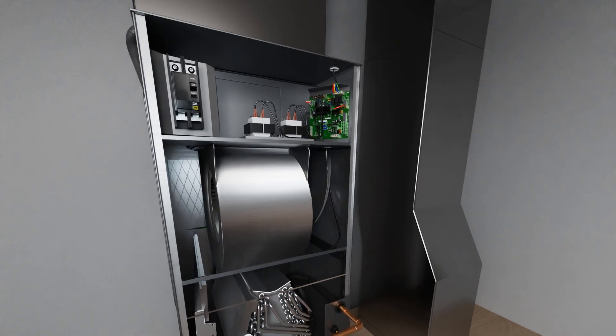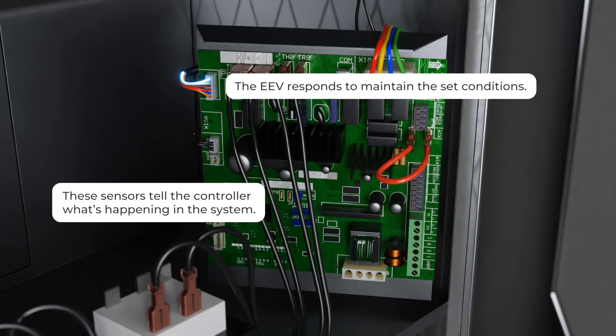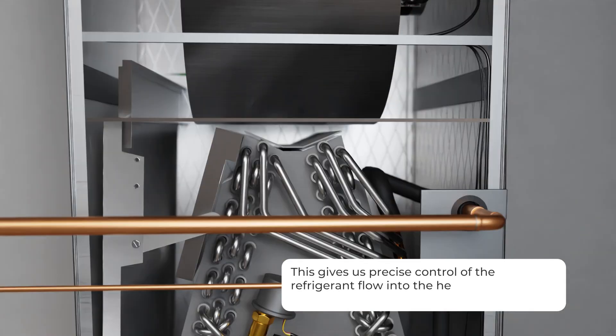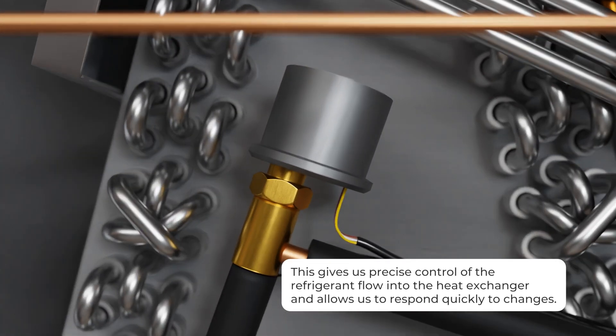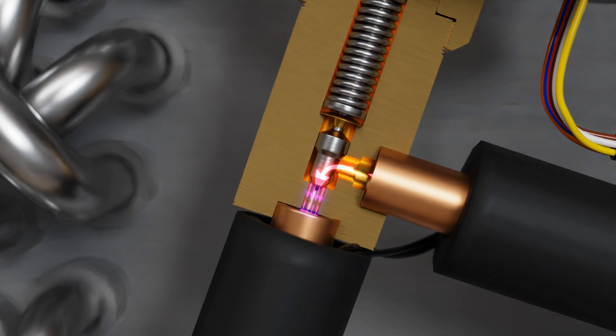The sensors tell the controller what's happening in the system and how the EEV will need to respond to maintain the set conditions. This gives us precise control of the refrigerant flow into the heat exchanger and allows us to respond quickly to changes.